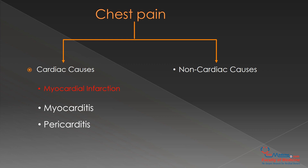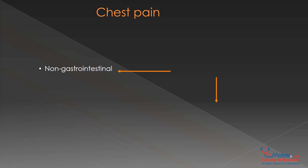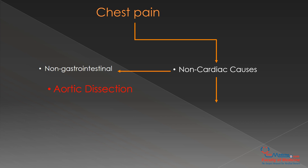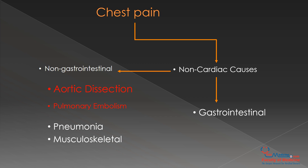For non-cardiac causes, there are non-gastrointestinal causes and gastrointestinal causes. Non-gastrointestinal causes include aortic dissection, pulmonary embolism, pneumonia, and musculoskeletal causes. Gastrointestinal causes include GERD, which is gastroesophageal reflux disease, and peptic ulcer.